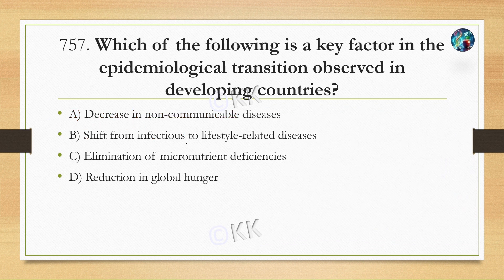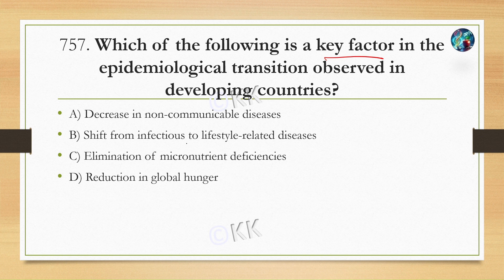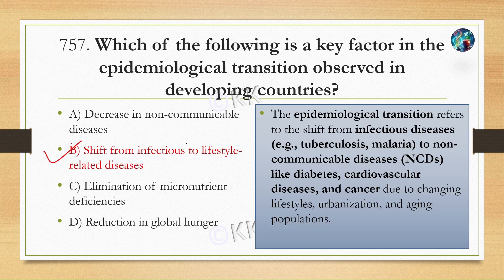Which of the following is a key factor in the epidemiological transition observed in developing countries? Option A: Decrease in non-communicable diseases, Option B: Shift from infectious to lifestyle-related diseases, Option C: Elimination of macronutrient deficiencies, Option D: Reduction in global hunger. The correct answer is Option B, shift from infectious to lifestyle-related diseases.